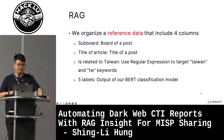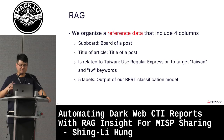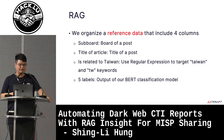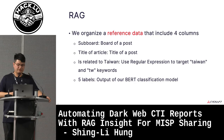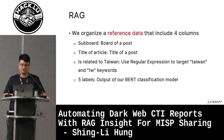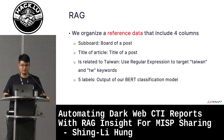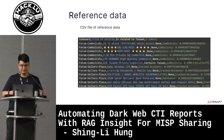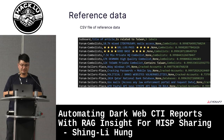In our case, we organize reference data with four columns. The first is the board and title of a post. The second indicates whether it is related to Taiwan, using regular expressions targeting 'Taiwan' and 'TW' keywords — this column is flexible to change. The final column contains the five labels output from our BERT classification model. We ultimately organize this into a CSV file with column headers.